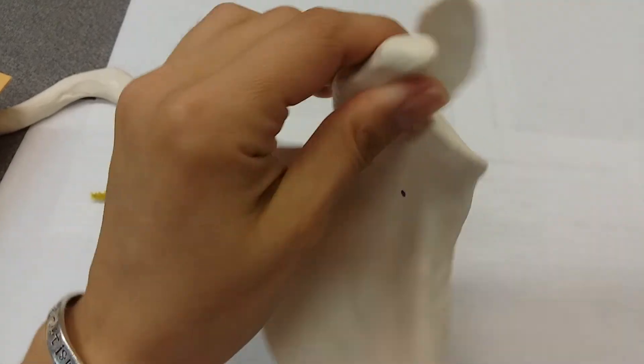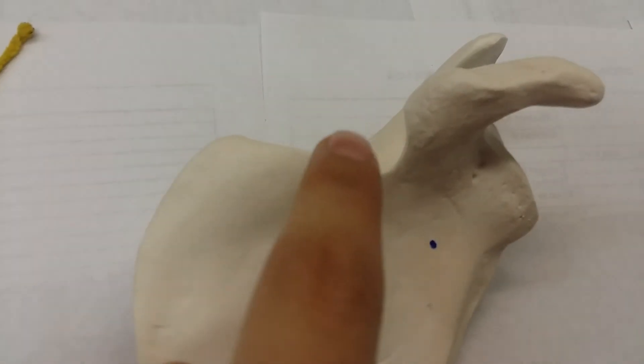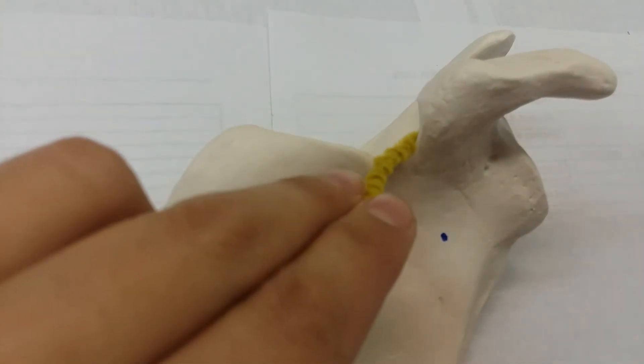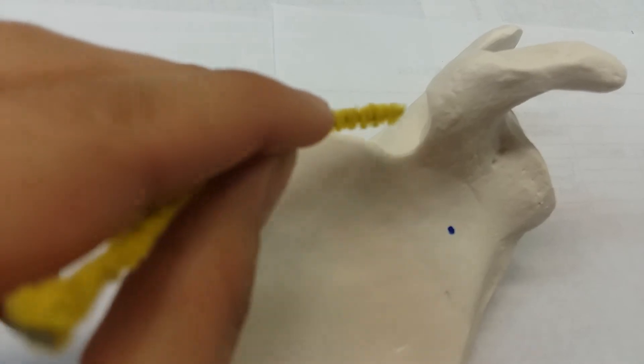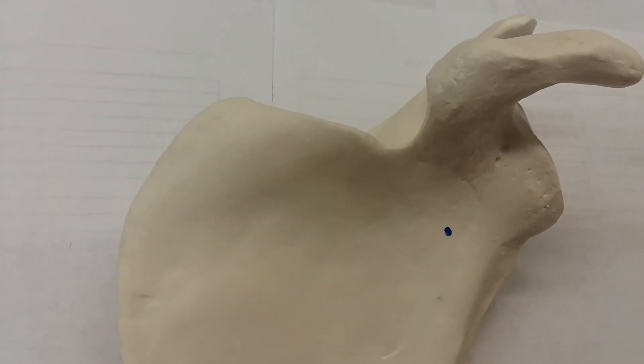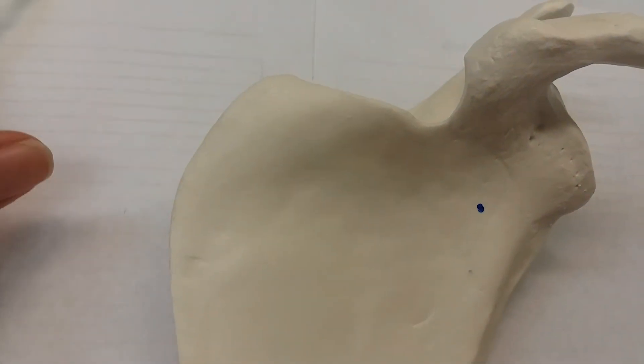Next we have our scapular notch, which requires going back to the anterior side. This is your scapular notch. Fancier models are going to have a much sharper and more detailed hole. Ours kind of looks a little bit like a groove on this budget-friendly model.